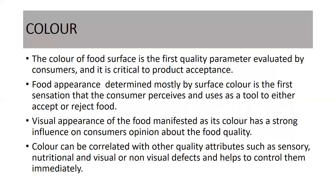The color or appearance of food is considered as one of the most important quality parameters. It is more important than taste and odor as it increases the attractiveness of the product. The color of the food surface is the first quality parameter which is evaluated by consumers and it is critical to product acceptance. The first and foremost thing we see in a food product is how it appears, and the appearance of food is determined mostly by the surface color, which is the first sensation the consumer perceives and uses to either accept or reject the food.